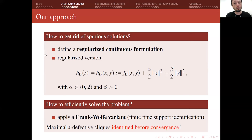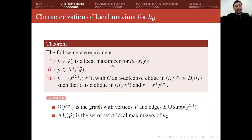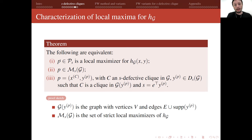Focusing on the regularized continuous formulation, we give results related to the new function H_g. We prove that three statements are equivalent: P is a local maximizer; P belongs to the set of strict local maximizers (i.e., P is also a strict local maximizer for H_g); and P is a point where X_c is the characteristic vector and Y_P satisfies the cardinality constraint, such that C is a clique for the extended graph obtained by including the fake edges described by Y_P.